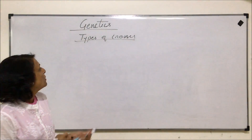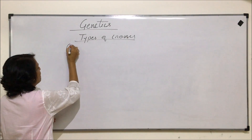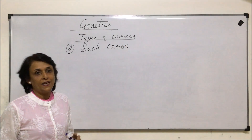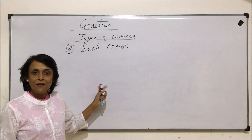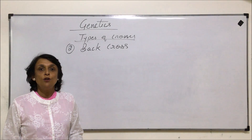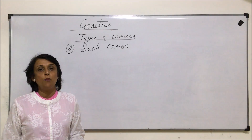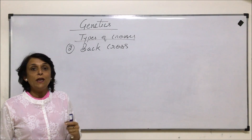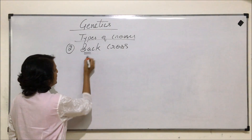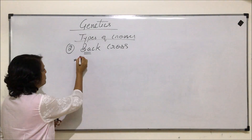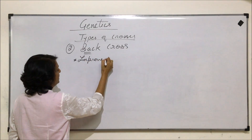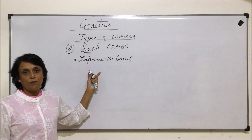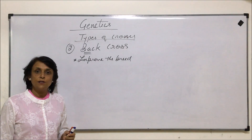Let us talk about the second type of cross, that is back cross. We talked of test cross in the earlier video — monohybrid as well as dihybrid — and that was to test or find out the genotype of the unknown. The idea of back cross is to improve the breed, so these kinds of crosses are performed to improve the breed of the organism. We'll take a couple of examples.